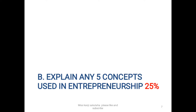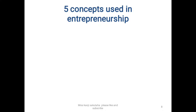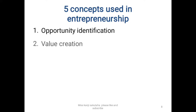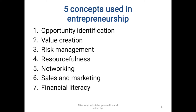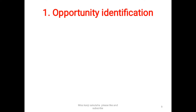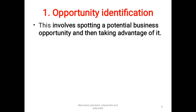Part B says explain any five concepts used in entrepreneurship. I have seven here: opportunity identification, value creation, risk management, resourcefulness, networking, sales and marketing, and financial literacy. Even without explanation you should be able to understand these terms in simple English. Where it says five concepts, you can use any five — if you can't remember the last two, the first five are fine.